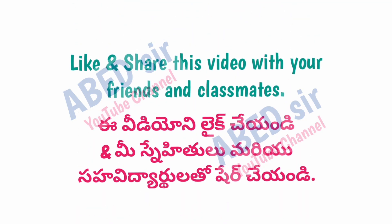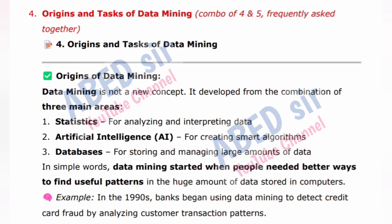Next important long question 4: Origins and Tasks of Data Mining. Data mining is not a new concept. It developed from the combination of three main areas: 1. Statistics — for analyzing and interpreting data. 2. Artificial Intelligence (AI) — for creating smart algorithms. 3. Databases — for storing and managing large amounts of data. Data mining started when people needed better ways to find useful patterns in huge amounts of data stored in computers. Example: in the 1990s, banks began using data mining to detect credit card fraud by analyzing customer transaction patterns.